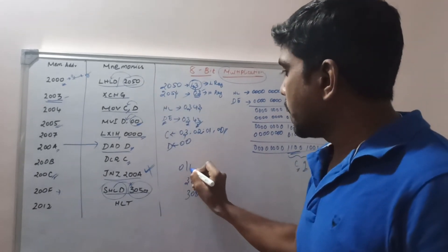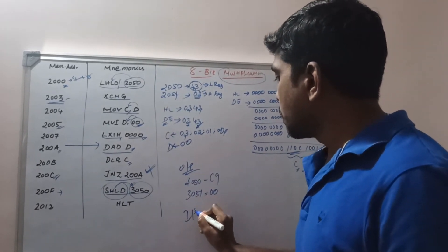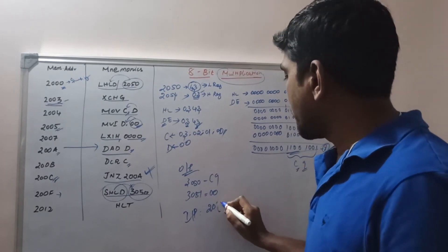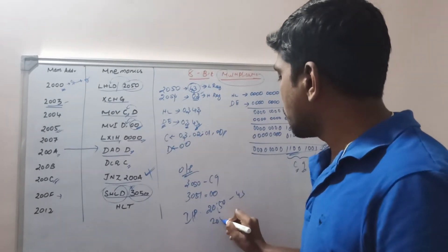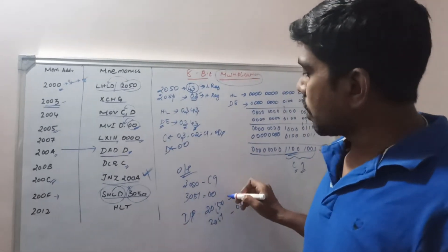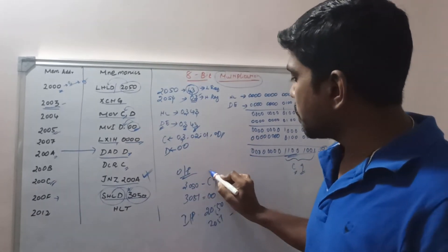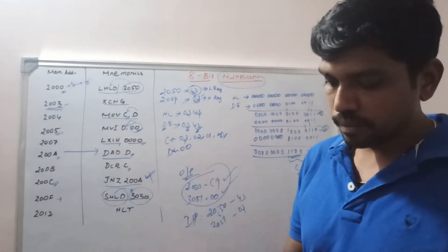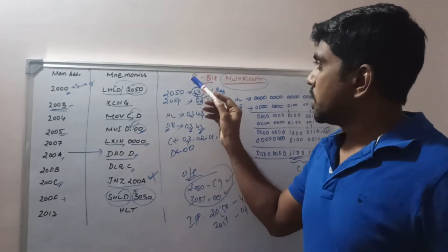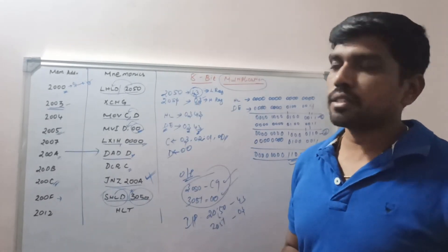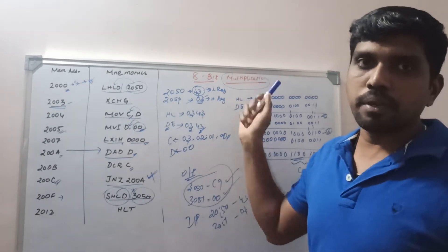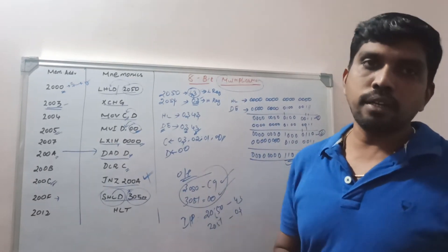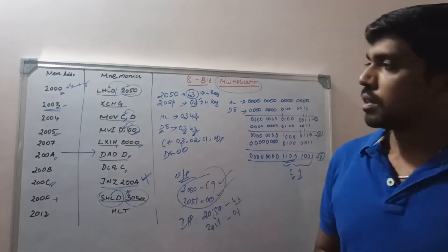In this program, the input is taken from memory location 2050H containing 43H, and from 2051H containing 03H. After executing the 8-bit multiplication program, the result is stored at 3050H = C9H and 3051H = 00H. The main key point is that multiplication operation is not directly possible in the 8085 microprocessor — if you want to perform multiplication you must apply the repeated addition function. Thank you.